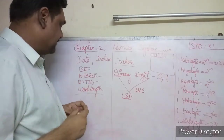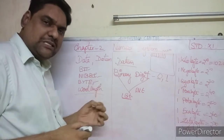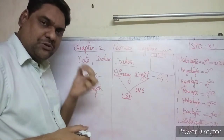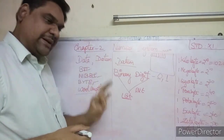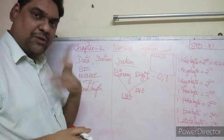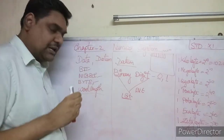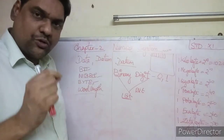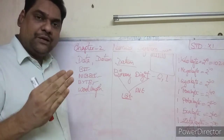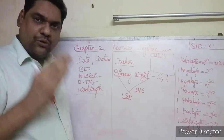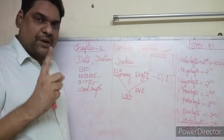To summarize: one bit is the smallest place in memory where you can store either 0 or 1. Four bits make one nibble. Eight bits make one byte.